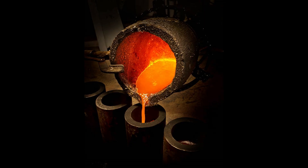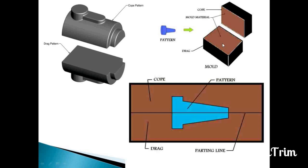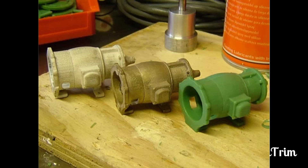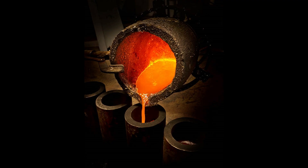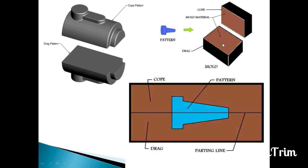Next and very important is the pattern. Pattern is a replica of the object to be created. It is made by either wood, wax, or other suitable material. It is placed into the molding flask and sand is rammed over it, which forms an object cavity into the sand.